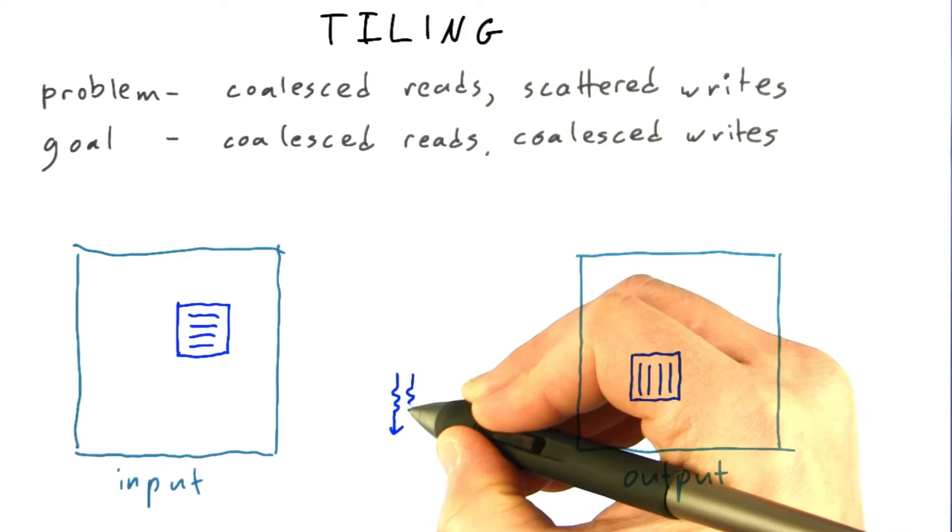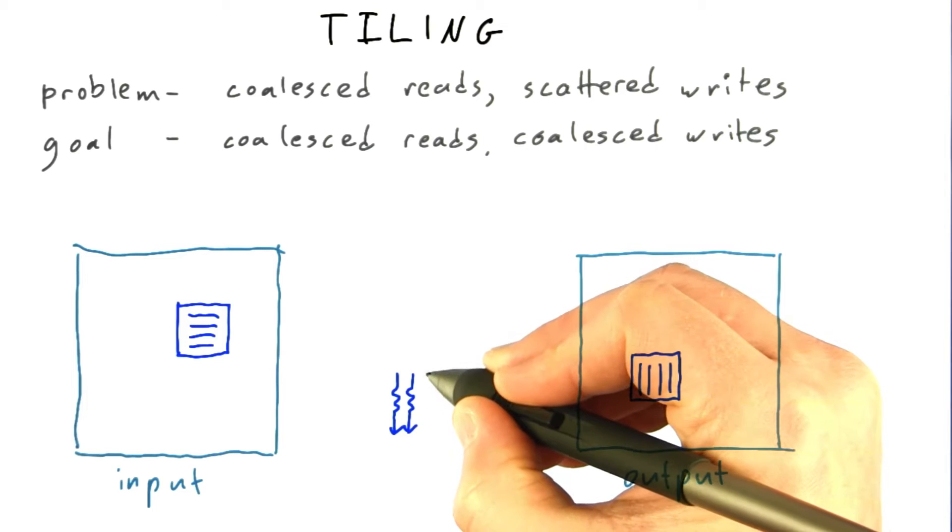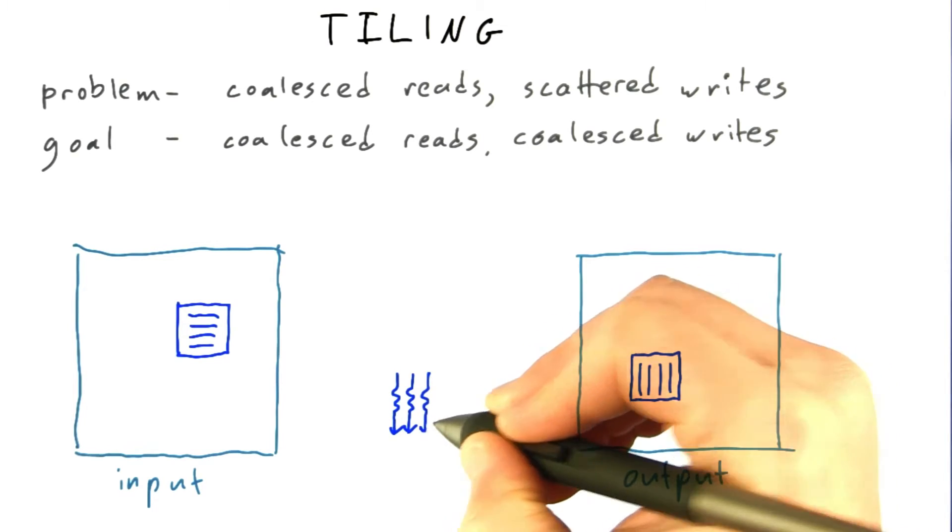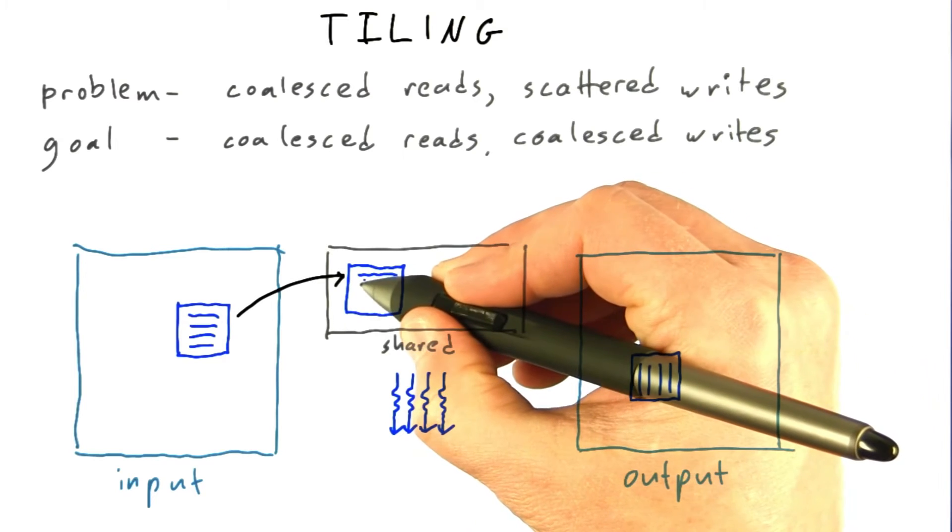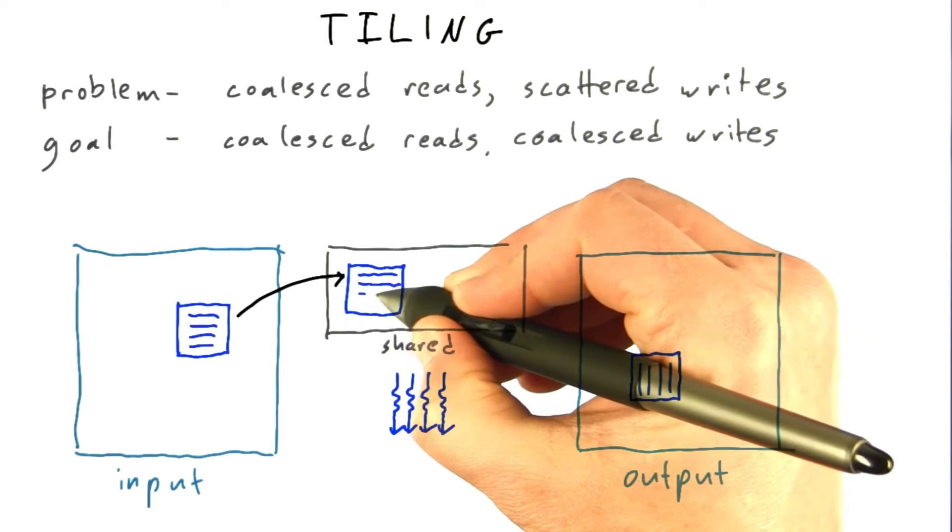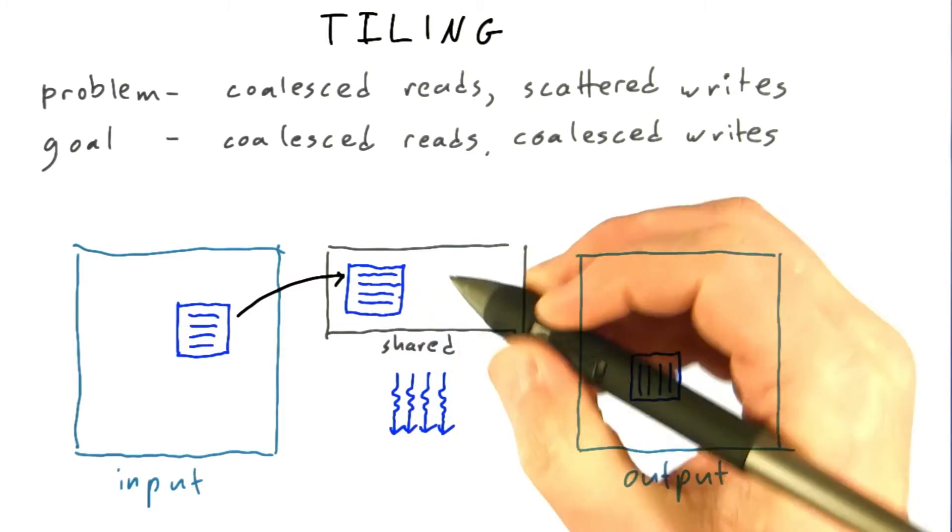The threads in this thread block will work cooperatively together to perform this copy and transpose of a tile of elements at a time. The threads will copy the tile into shared memory belonging to that thread block.